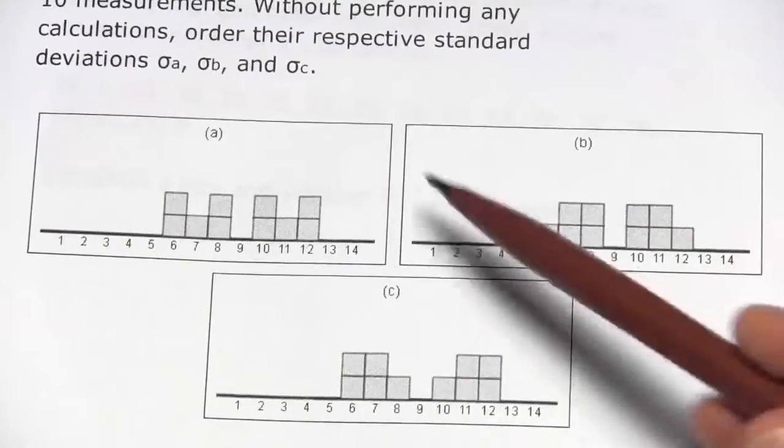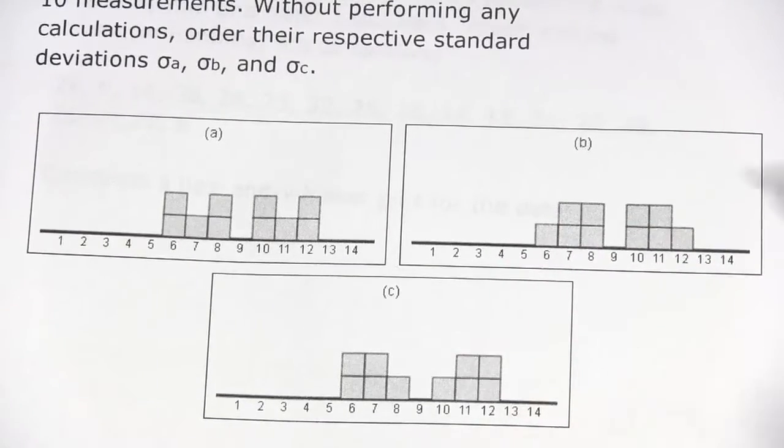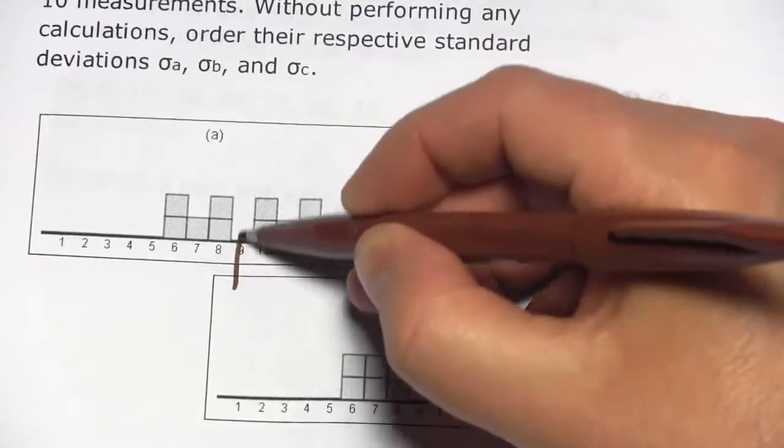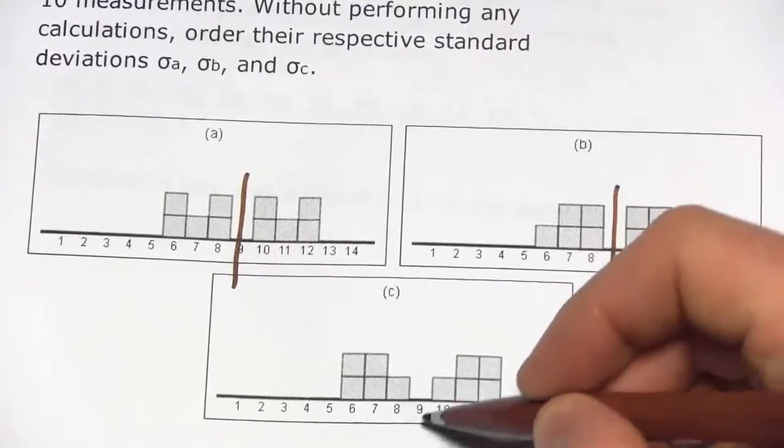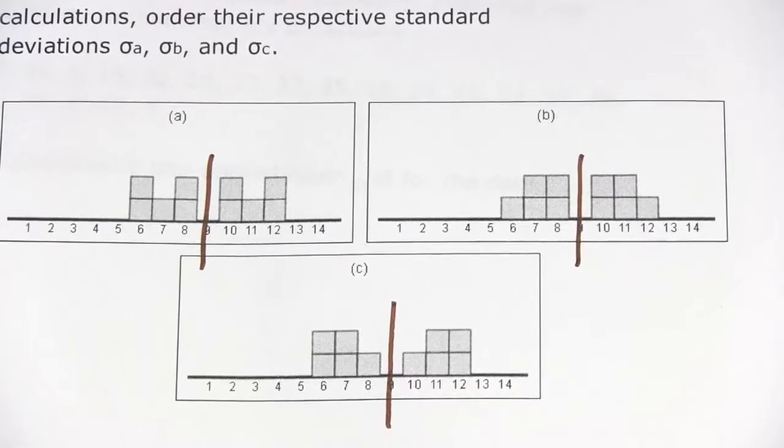There's a note in the problem here that these distributions are all symmetrical and what you can notice is that they're all symmetrical around 9. So we're going to assume that 9 is the mean here of each of these distributions.